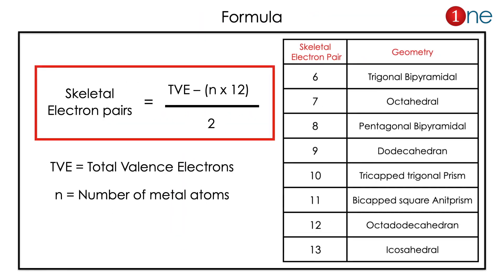Here the formula is basically the skeletal electron pair calculation. It is a combination of total valence electrons and number of metal atoms. Here if you use both, you will find the total electron pair.